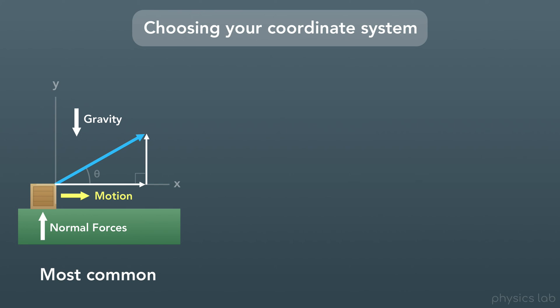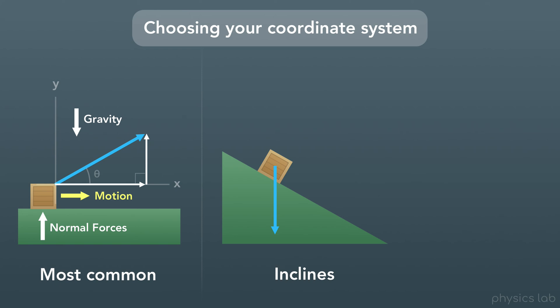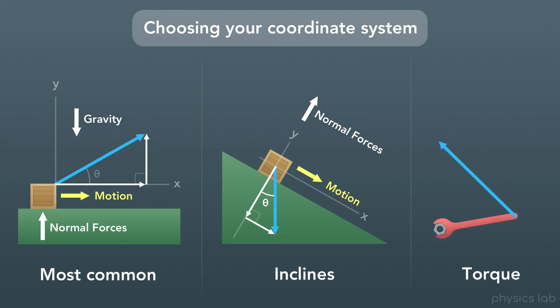But sometimes we're going to work with problems where an object is on an incline at some angle. In this case, the normal force is still perpendicular to the surface, and the object's motion is still parallel to the surface. So it'll be most useful to set up our coordinate system with the x-axis parallel to the object's motion. And as a third example, when we deal with forces that create a torque around some pivot point, we're going to break the force into components that are parallel and perpendicular to what we call the arm — which in this case is a wrench. So we'll use different coordinate systems for different problems, but in general, the coordinate system will be most useful if one of the axes is in the same direction as the object's motion.